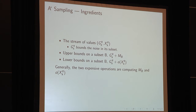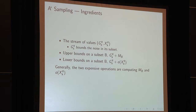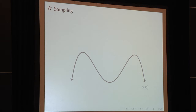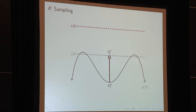Here are the ingredients we need. We have the stream of values from Q — where G bounds the noise in its subset. We have upper bounds on a subset B in Q: the Gumbel value and the bound on O. And we have lower bounds: the Gumbel value and O at its location X. Generally the two most expensive operations are computing the bounds and the difference of the log densities.